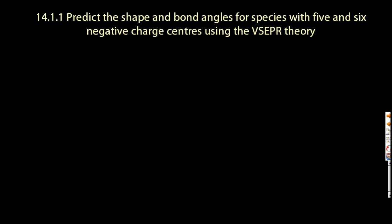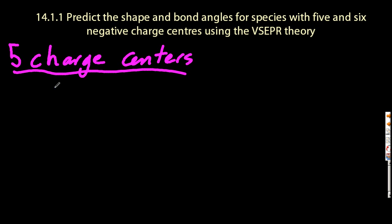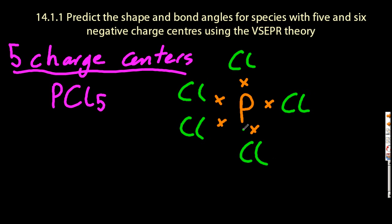Valence shell electron pair repulsion theory with five and six negative charge centers. Starting off with phosphorus pentachloride. Phosphorus is in group five, so it has five valence electrons. Those five chlorines will go around evenly spaced. Filling in the dots to make the Lewis structure for phosphorus pentachloride.